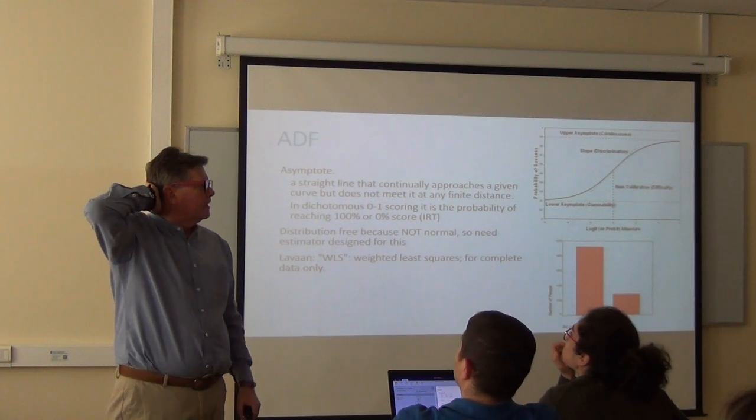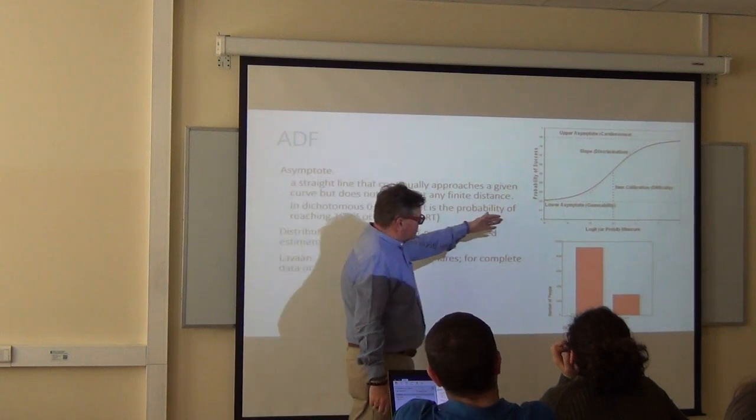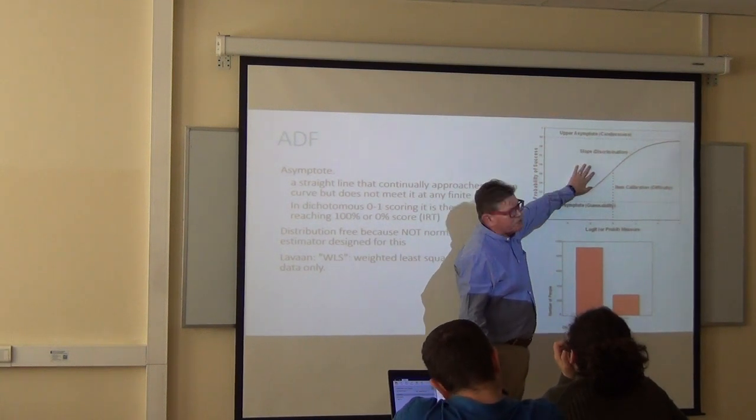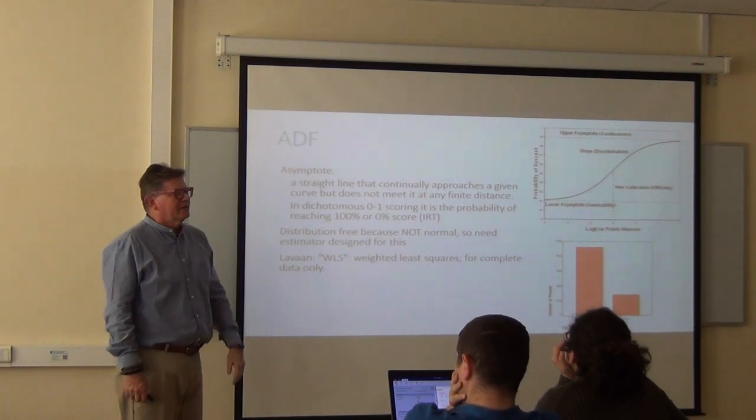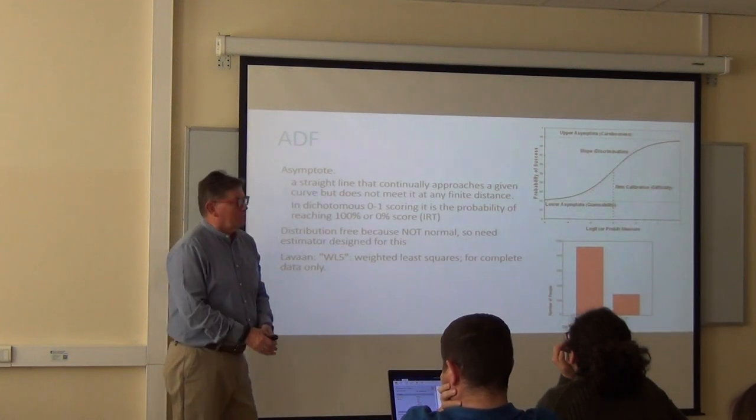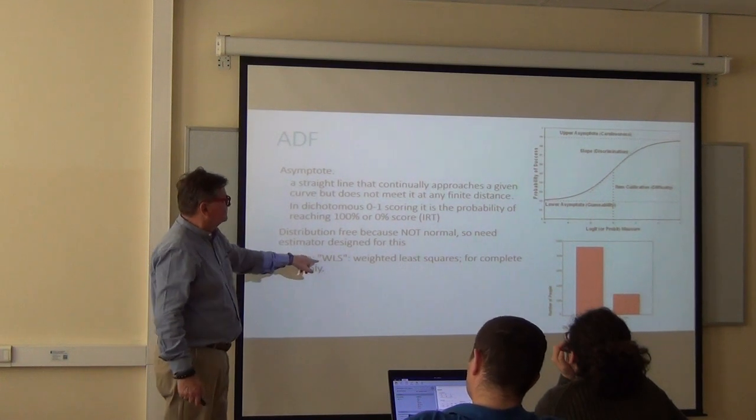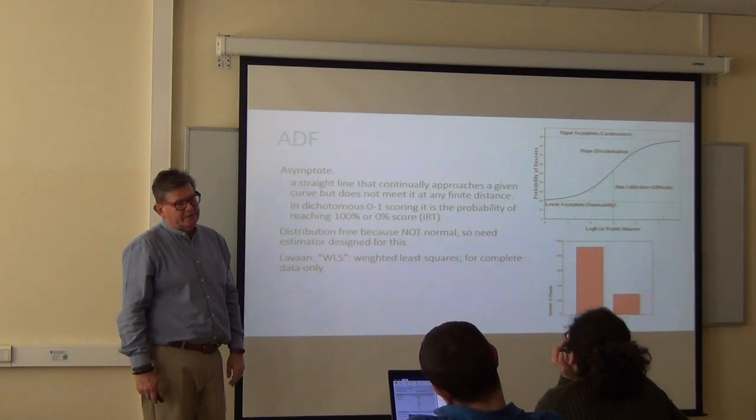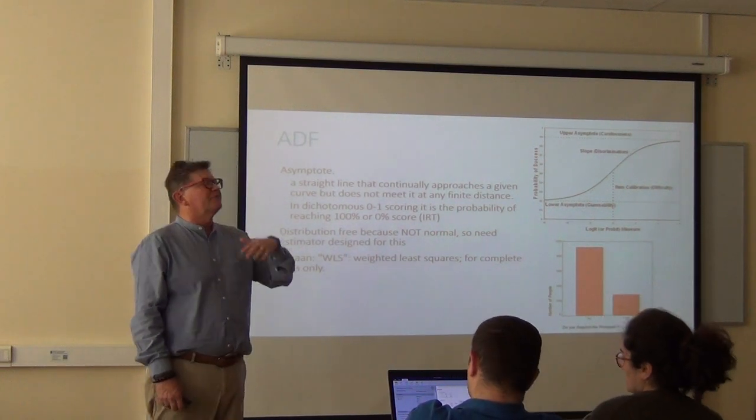With multiple choice distributions that aren't normal, we have to use this type of analysis - logistic. That's what asymptotic distribution free means: it's doing your asymptote, your logistic, and it's distribution free. It doesn't care whether it's normal, skewed, or flat. In Lavon, the option is WLS for the estimator - weighted least squares for complete data only, which is one reason I like to fill in all the missing data or decide about throwing away invalid people before I even attempt this.